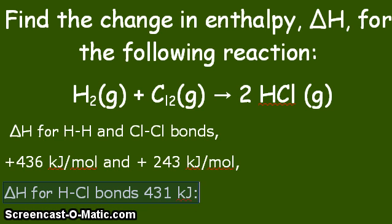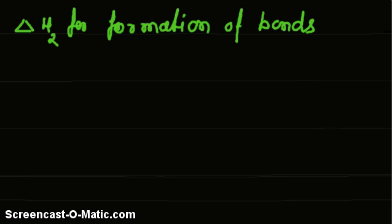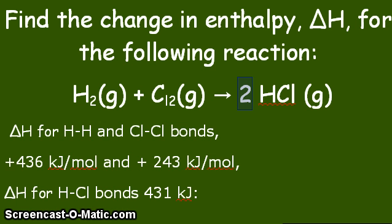However, please find that the bonds are 2. In this case there are 2 bonds, so delta H will be 2 into the value 431 for formation of 2 bonds.